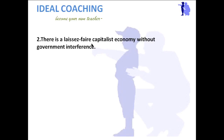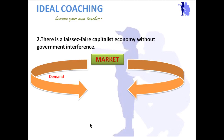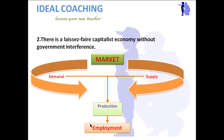In the economy, laissez-faire means there should be no interference from any body, especially the government. For example, in a market, people demand something and want to buy it. To fulfill that demand there must be supply, and to supply something you have to produce it, which means you need workers and you hire them, giving employment. So automatically, demand creates supply, supply creates production, and production creates employment — everything goes on automatically without government interference.